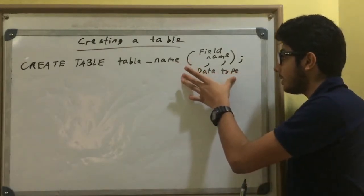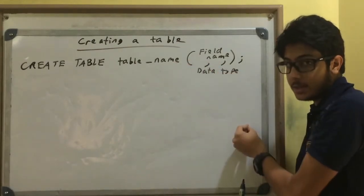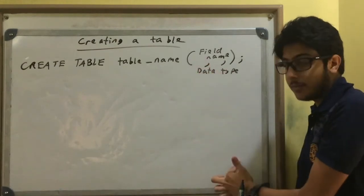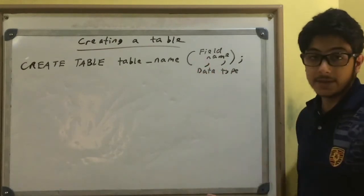And then inside these brackets, you put in your field names and its data type, with commas separating each field. And then the semicolon ends the statement.